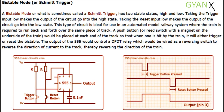The next type is the bistable mode. A bistable mode, or what is sometimes called a Schmitt trigger, has two stable states: high and low. Taking the trigger input low makes the output go into the high state, and taking the reset input low makes the output go into the low state.